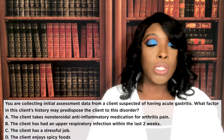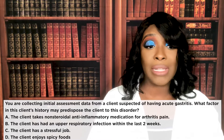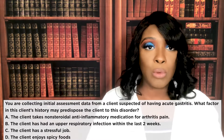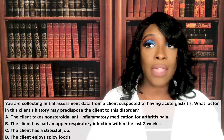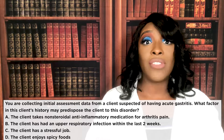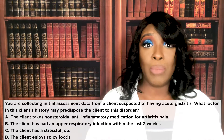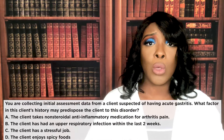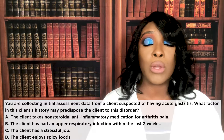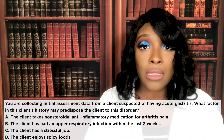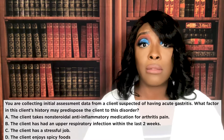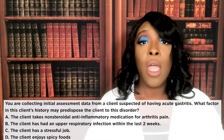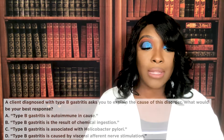The correct answer is A — the client is taking NSAIDs. NSAIDs are very hard on the stomach and can cause ulcers. An upper respiratory infection would not predispose a client to gastritis. Stress and spicy foods can worsen existing gastritis, but to predispose means something that causes the inflammation of the stomach lining — and NSAIDs can do that.